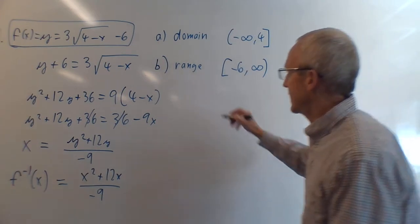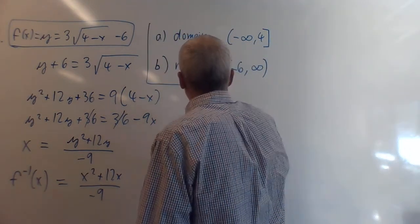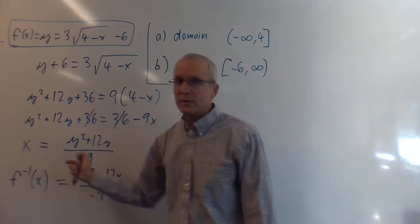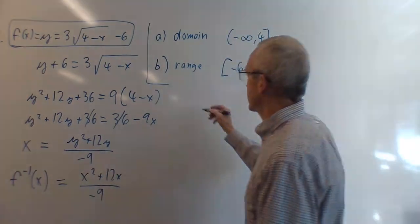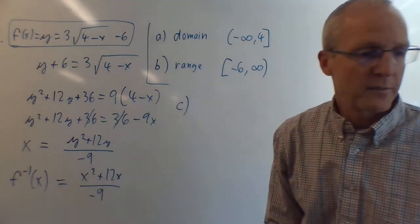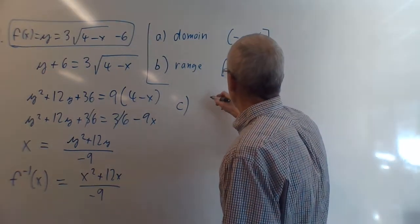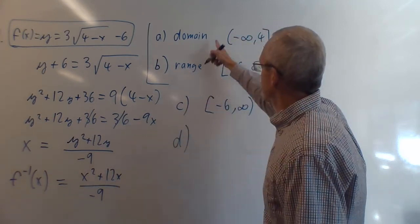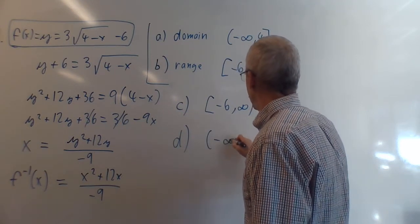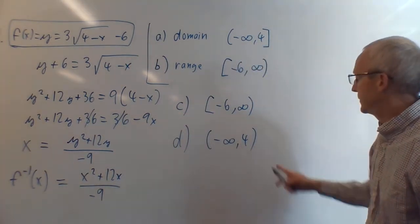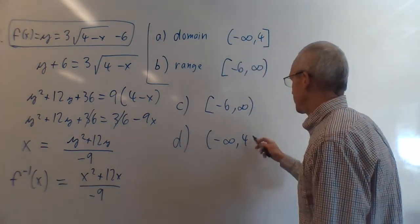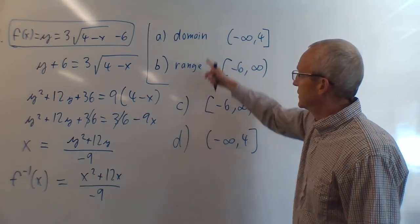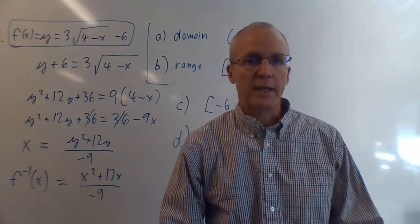For inverse functions, since we're switching x and y, we just swap domain and range. So the domain of f⁻¹(x) is [-6, ∞) — the range of f — and the range of f⁻¹(x) is (-∞, 4] — the domain of f. Make sure you don't get those mixed up; they just swap because we're swapping x and y.